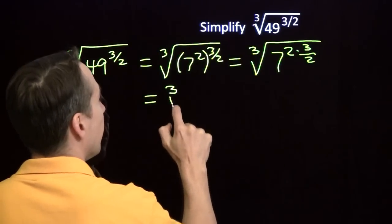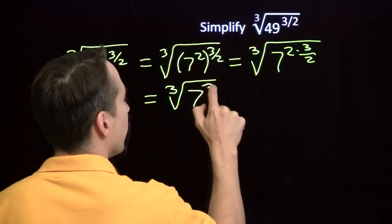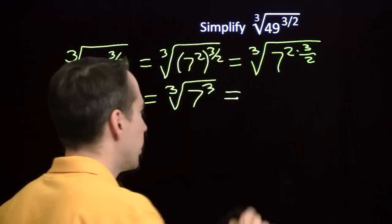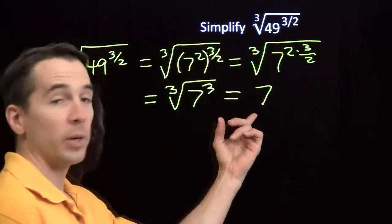So now we just have the cube root of 7 cubed. What number do you cube to get 7 cubed? You cube 7. So our answer is 7.